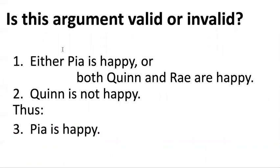Here are our two premises: Either Pia is happy or both Quinn and Ray are happy. And premise number two: Quinn is not happy. Now let's assume both of those things are true. How could it be that either Pia is happy or Quinn and Ray are happy? Either one of those things has to be the case — either it's Pia or it's the other two.